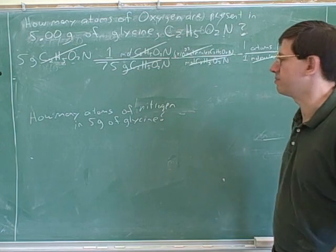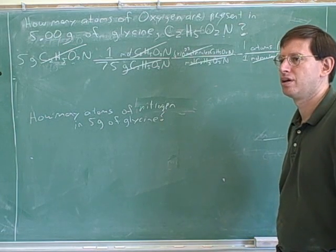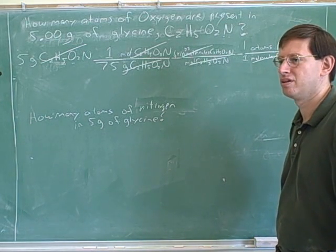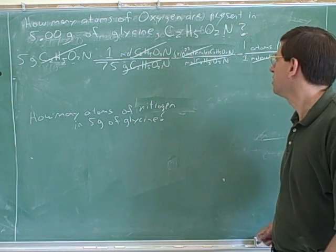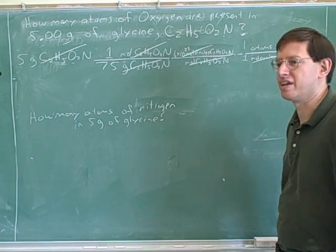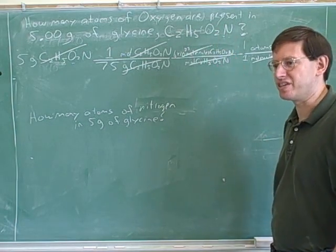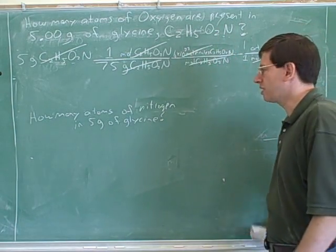So who do we have the most atoms of? Hydrogen. And then who? Carbon and oxygen. Yeah, and then nitrogen. In fact, we have twice as many carbon as nitrogen and five times as many hydrogen as nitrogen. Okay. Good.